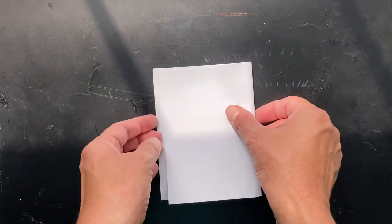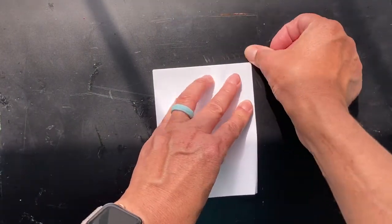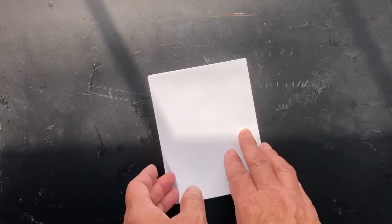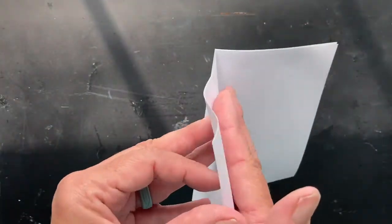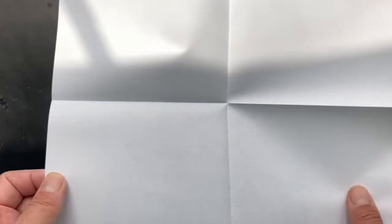Fold your paper into quarters. So you should have two pieces of paper that when you open them up, they look like this.